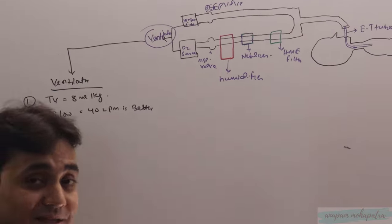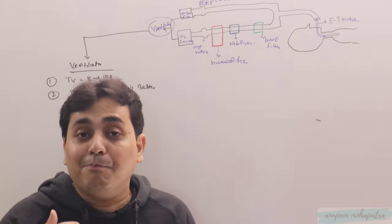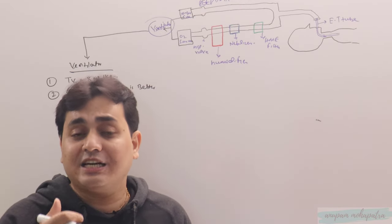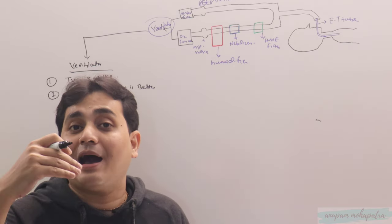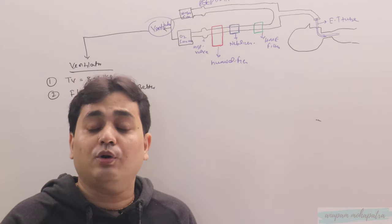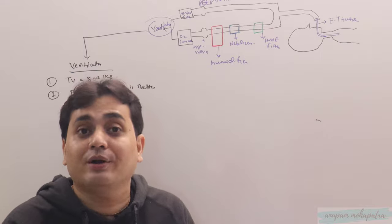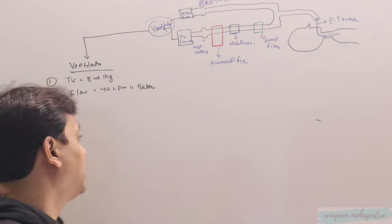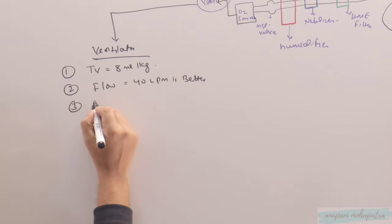If you give larger flow, there will be turbulence, and when there's turbulence, impaction and sedimentation will take precedence over diffusion, so the alveoli will not get nebulized. The lower the flow, the more laminar flow you can get, and that will maximize delivery of aerosol to the alveoli. So flow of 40 liters per minute is better.